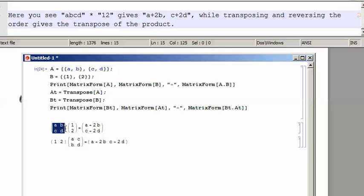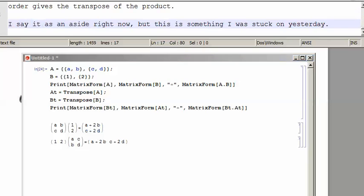Here you see A, B, C, D, and 1, 2 gives A plus 2B and C plus 2D, while transposing 1, 2 to 1, 2, A, B, C, D to A, C, B, D gives the transpose of the product A plus 2B and C plus 2D. I say it as an aside right now, but this is something that I was stuck on yesterday.